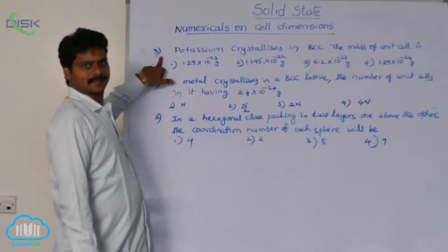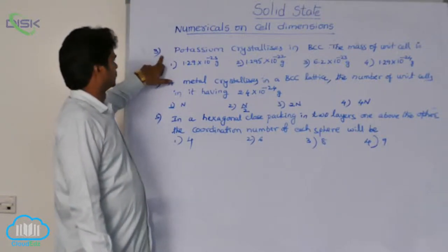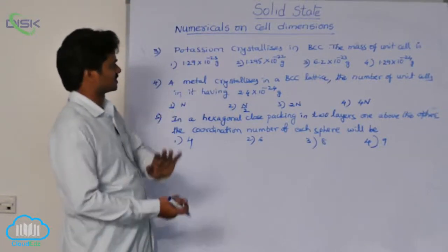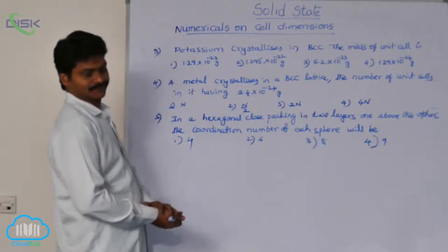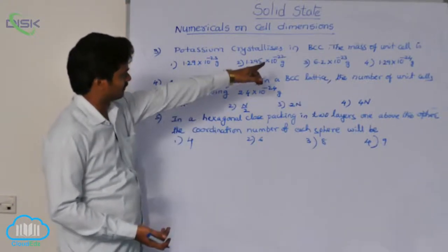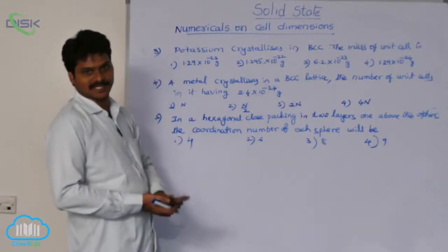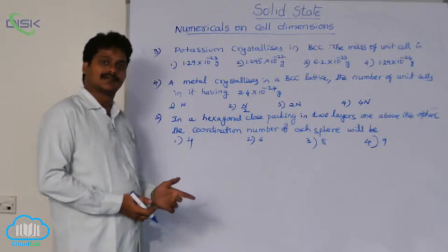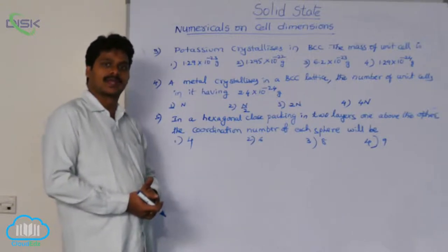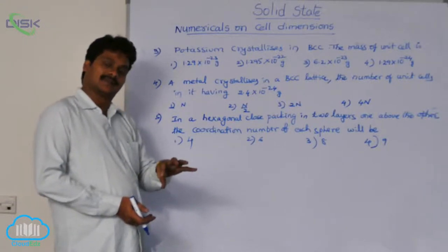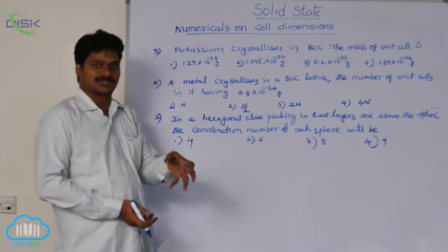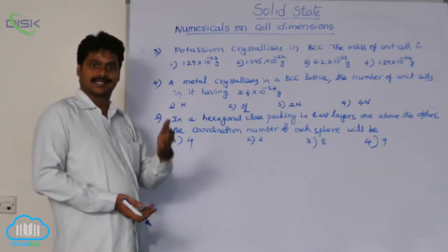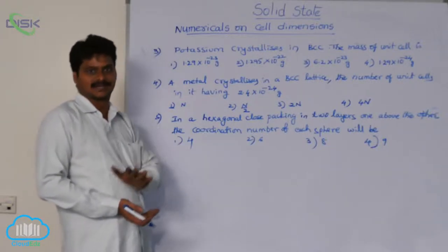Third question: potassium crystallizes in BCC, asking for the mass of the unit cell. How to calculate the mass of a unit cell? The mass of the number of effective atoms in that unit cell gives the mass of the unit cell.